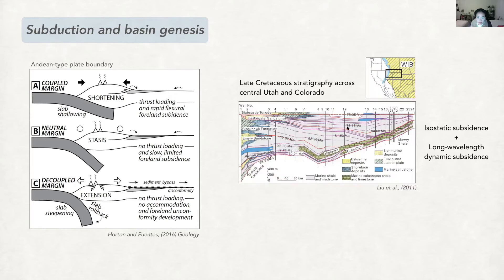An example shown here is the Late Cretaceous Western Interior Seaway in North America. Here, the subsidence analysis in those sedimentary basins reveals components of long-wavelength dynamic subsidence in addition to the isostatic subsidence. This dynamic subsidence is also linked with the migration of the Farallon slab at a similar time period.